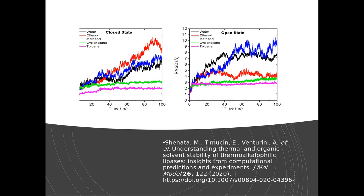An example of a normal RMSD — not pairwise — is this analysis from a recent publication from our lab. It shows the RMSD of a protein in different organic solvents over a hundred nanoseconds. In toluene the protein was totally stable; in cyclohexane there is no big displacement; but in methanol the protein is almost denatured and the system is really unstable. This is the one-dimensional RMSD, but not yet what we are aiming for in this video.